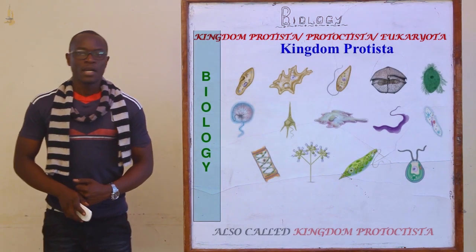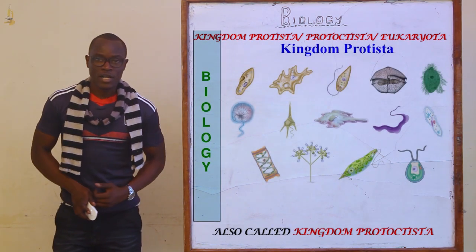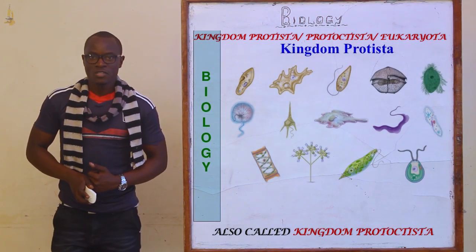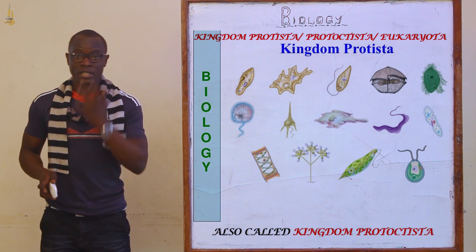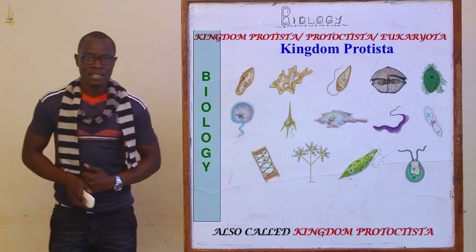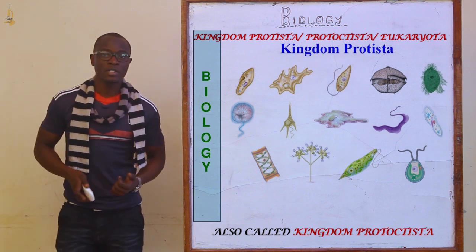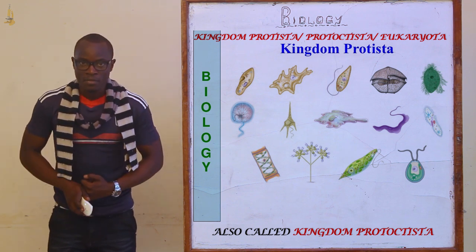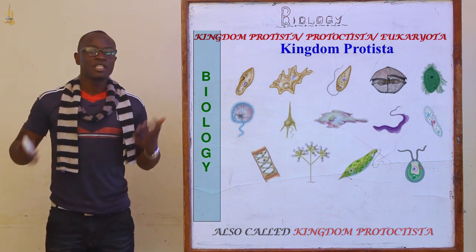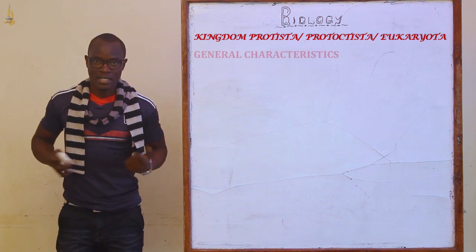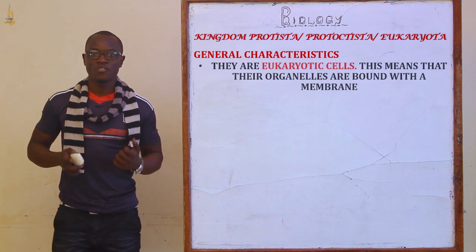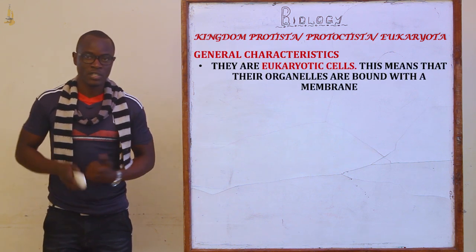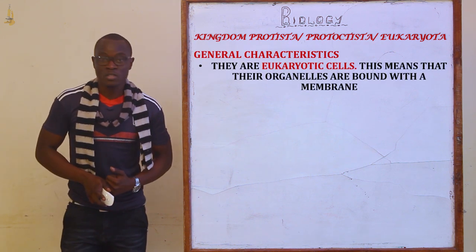Welcome. Now I want us to look at Kingdom Protoctista. For the Kingdom Protoctista, we see that they mainly include algae and the protozoa. So what are the general characteristics of the organisms under the Kingdom Protoctista?